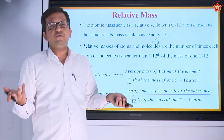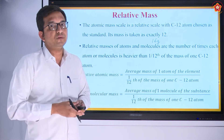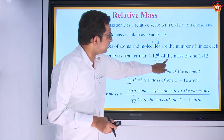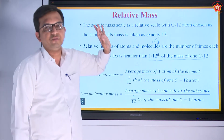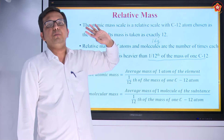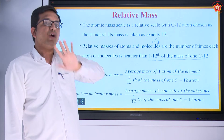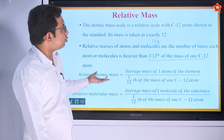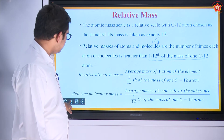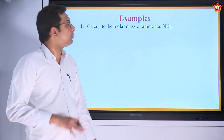Relative masses of atoms or molecules are the number of times each atom or molecule is heavier than one-twelfth the mass of one carbon atom. For example, hydrogen mass is 1 and nitrogen mass is 14. The standard is 1/12th the mass of C12, and all other masses are compared to this standard. Now let's see how to apply this and find masses of various elements and compounds through examples.